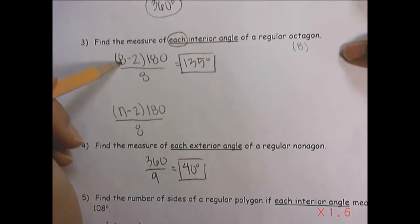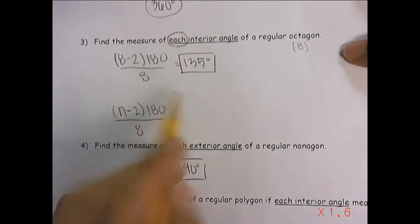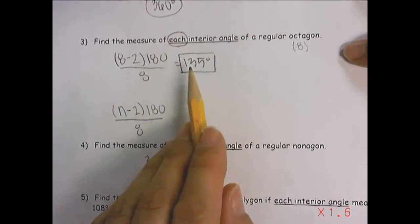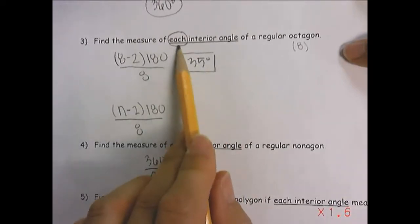So we're going to do eight minus two times 180 divided by eight, and when we do that, we will get 135, and again, it's asking for each.